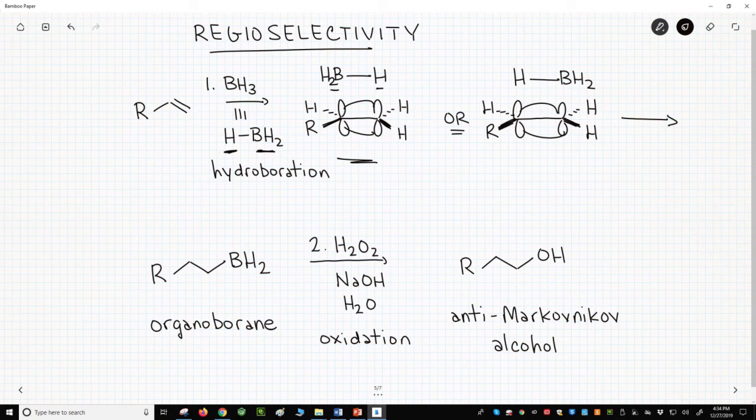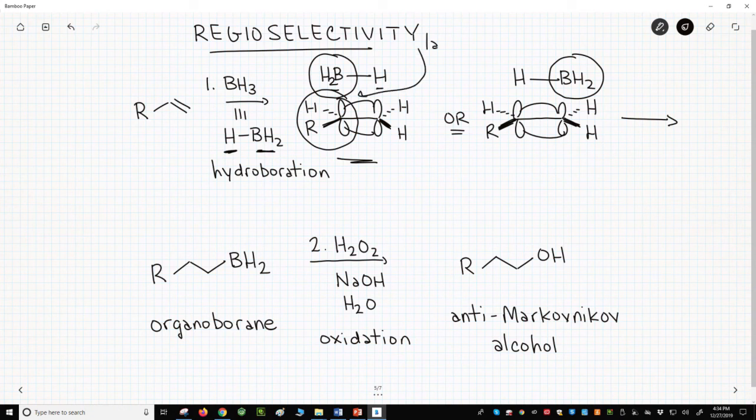The second option is favored because of sterics. The BH2 is the big side of BH3. Putting a larger BH2 group with the more substituted alkene gives rise to steric repulsion—a large steric repulsion. Sterics are minimized in the right hand structure.